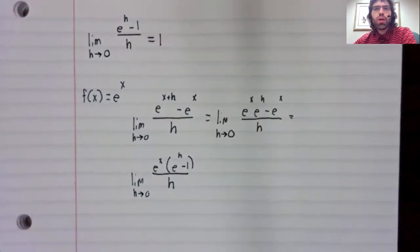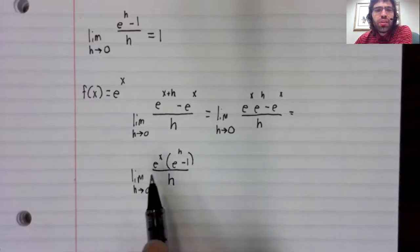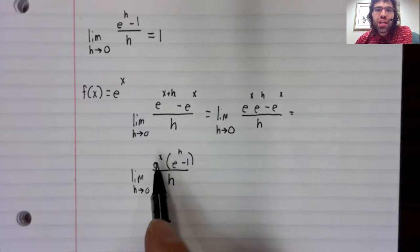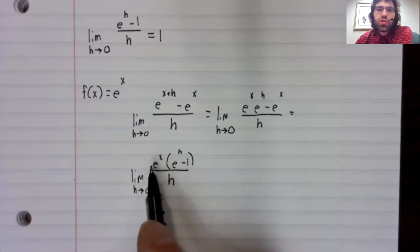We can pull the constants out of limits. And as unintuitive as it might be to think of e to the x as a constant, it's constant in the sense that as h approaches zero, e to the x isn't changing.